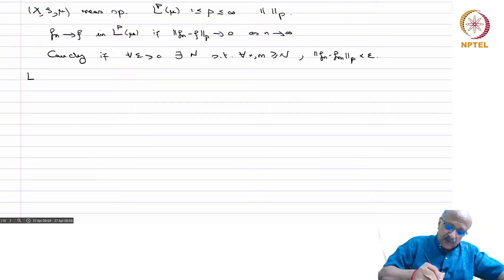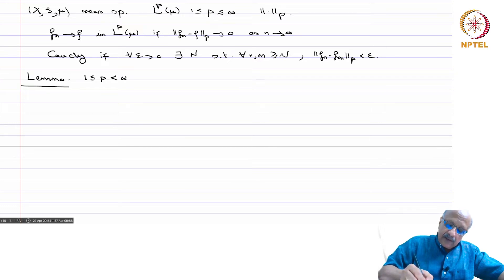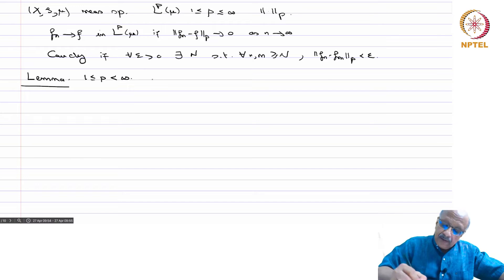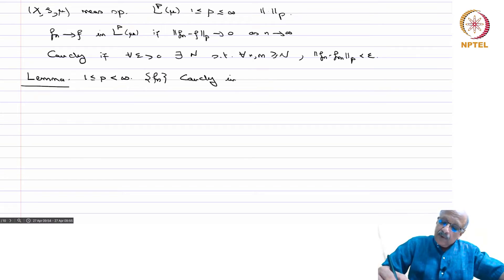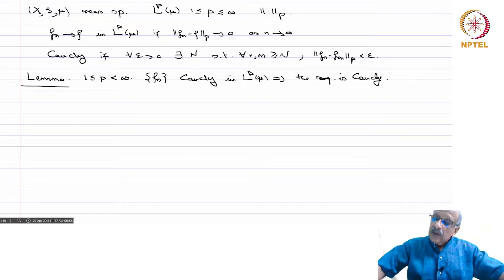Before that, let us start with the following lemma. There are many ways to do it; we will do one. For 1 ≤ p < infinity, if f_n is Cauchy in LP(mu), then the sequence is Cauchy in measure.